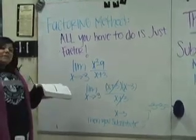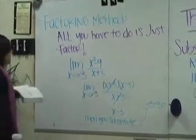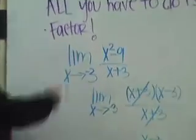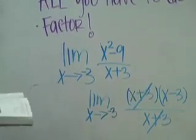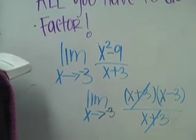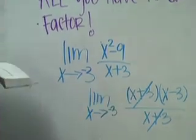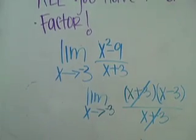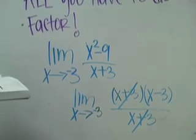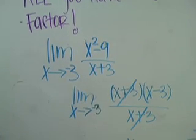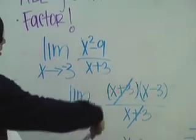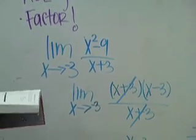All you do is simply factor. In this example, the limit as x approaches negative 3 of x squared minus 9 over x plus 3. You simply factor, and it's x plus 3 times x minus 3, all over x plus 3. Then x plus 3 gets crossed out, and you're left with x minus 3.